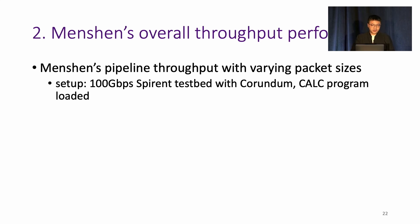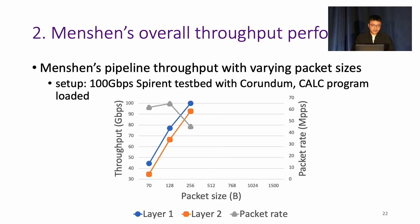To show Menshen's aggregate throughput performance, we use Corundum and load Calc program. The numbers are monitored by Spirent tester. As we can see, when packet size reaches 256 bytes, Menshen can achieve 100 Gbps and sustains this rate for the increase in packet size. We also synthesize an ASIC version of Menshen's pipeline which can work at one gigahertz, which translates into one billion packets per second.